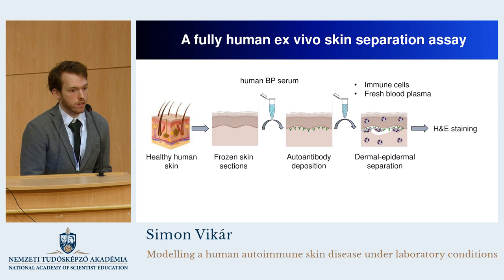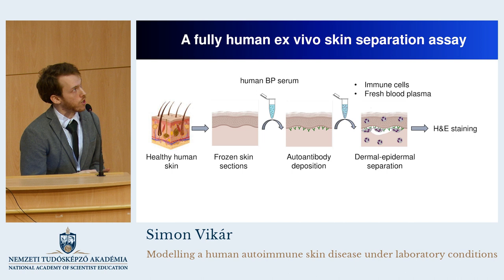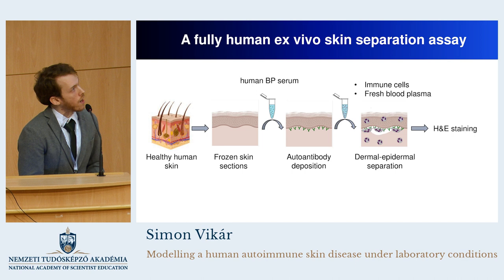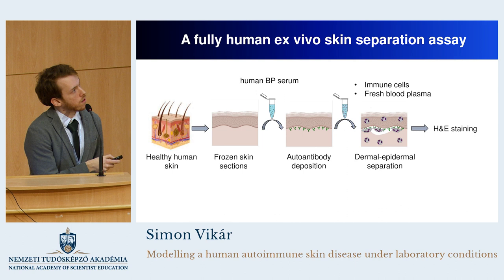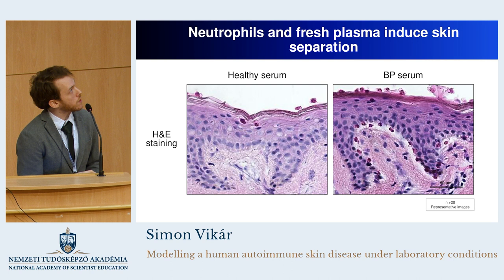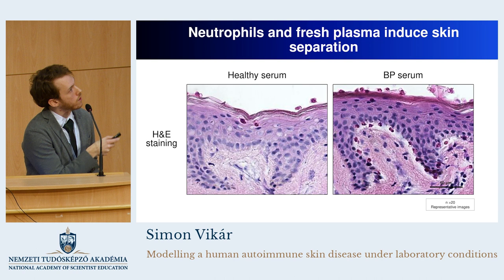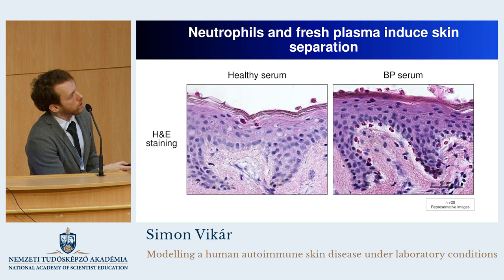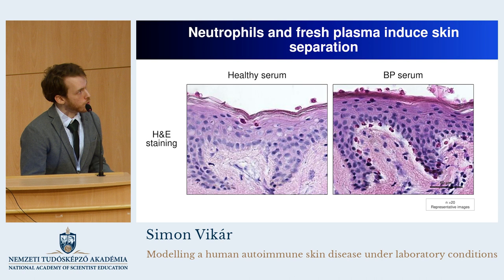The next aim was to produce dermoepidermal separation. To do that, we treated these tissues with freshly isolated immune cells, isolated from the peripheral vein of volunteers, in the presence of fresh human blood plasma. We performed hematoxylin and eosin staining, a basic staining method, and investigated the dermoepidermal separation by light microscopy. In a control experiment treated with control serum, the connections between the epidermis and the dermis are intact. But in the bullous pemphigoid-treated tissues, the differences are immediately visible: there are many immune cells at the site of the dermoepidermal connection, and there is also a tissue loss between these two layers. So we managed to reproduce the dermoepidermal separation in our model system.